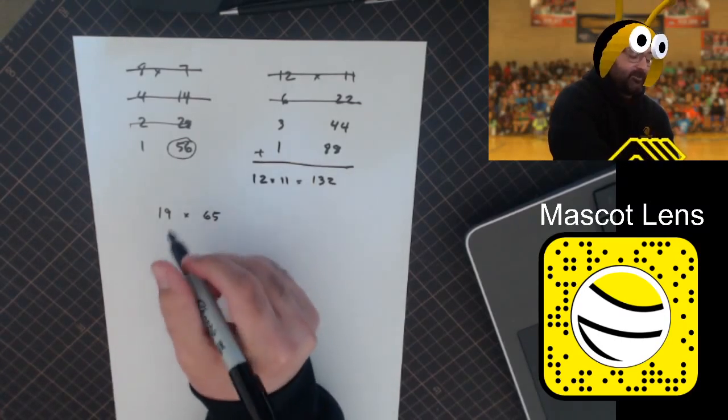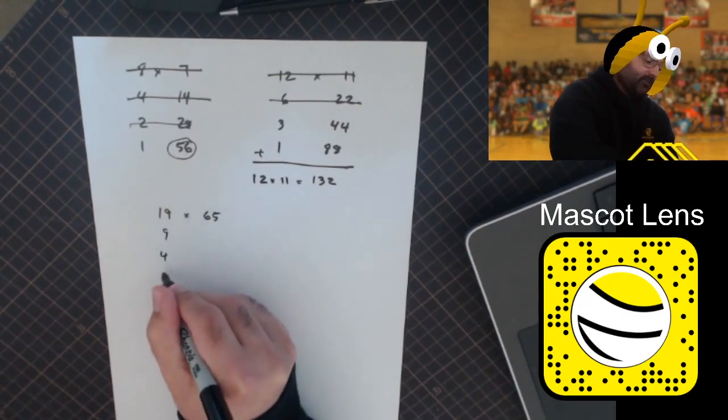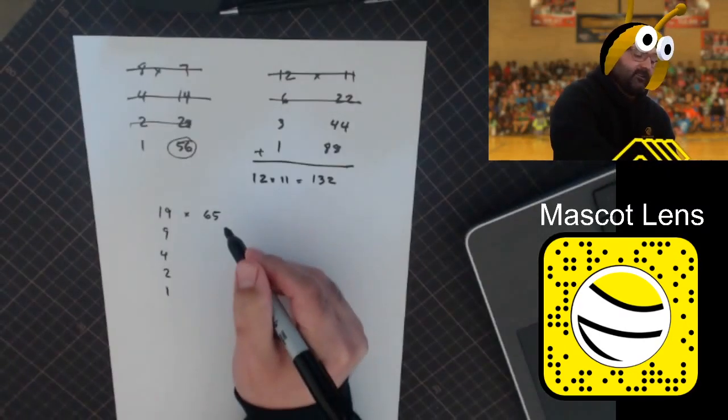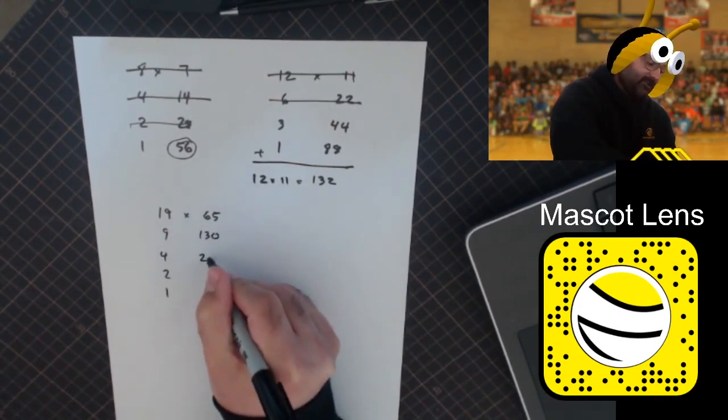One last time, go down the row and divide by two: nine, four, two, one. And double this row, adding the number to itself every time.